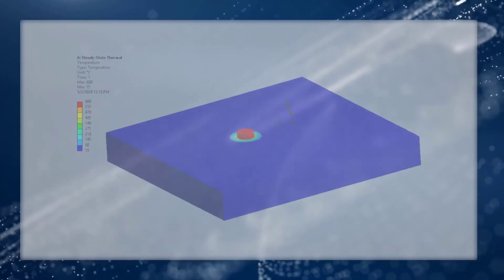The solver will calculate the view factors between each element, and then calculate the radiation based on the equation we learned in the previous lesson. Now with all the information defined, we can run the simulation and look at the results.